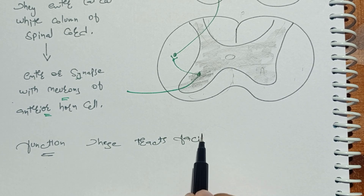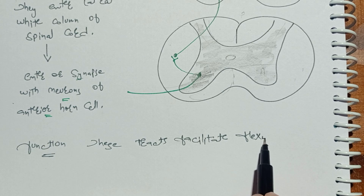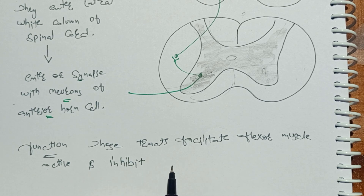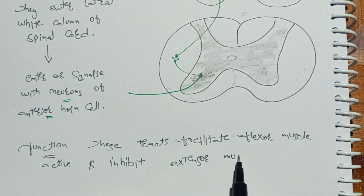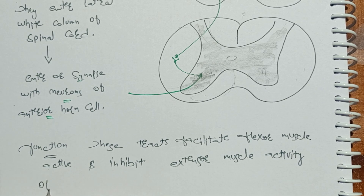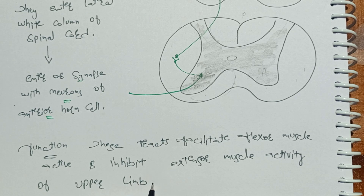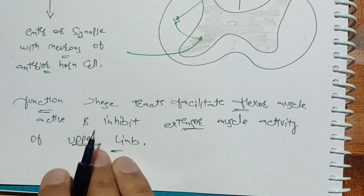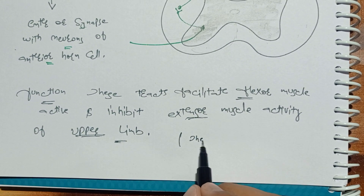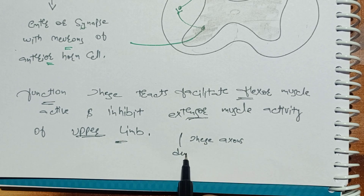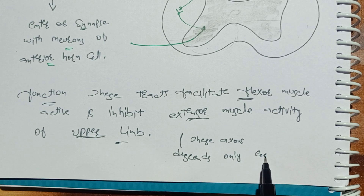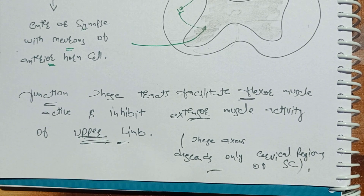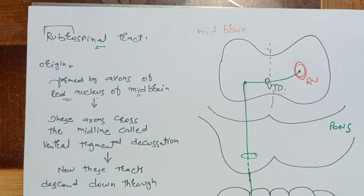Now the function: the rubrospinal tract facilitates flexor muscle activity and inhibits extensor muscle activity of the upper limb. Why only the upper limb? Because these axons descend only to the cervical regions of the spinal cord — that's why it affects the upper limb and not the lower limb.